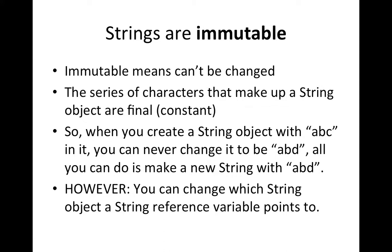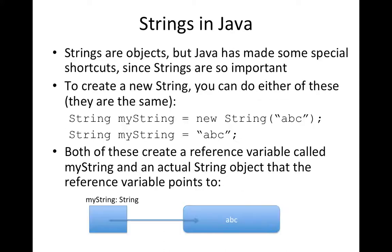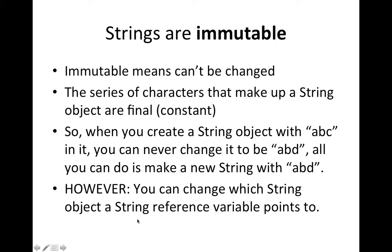We can't suddenly say I want that C to be a D and make it ABD. The only thing we can do is say I want an ABD string now, so let's take the ABC string, make a copy of it, and change the copy. It's also important to note that the object reference variables to a string, such as myString, we can change what this points at. We could say I don't want this to point at ABC, I want it to point at some other string object. We can change what the reference variable points to, but we can't change the characters inside of a string object once we've created it.